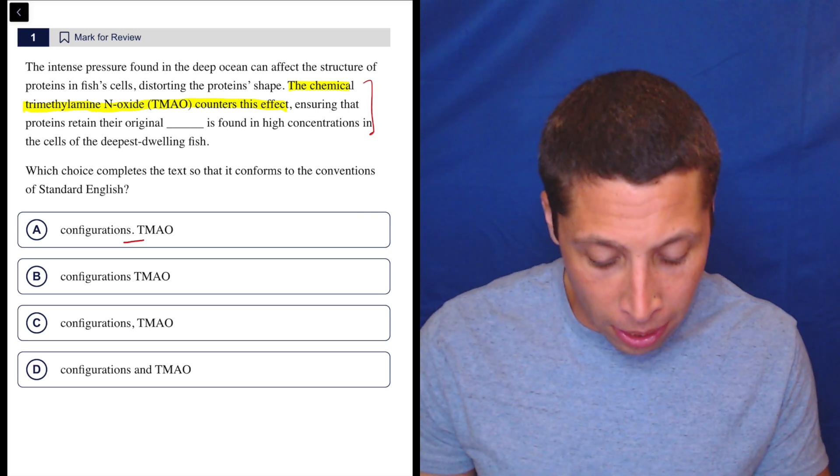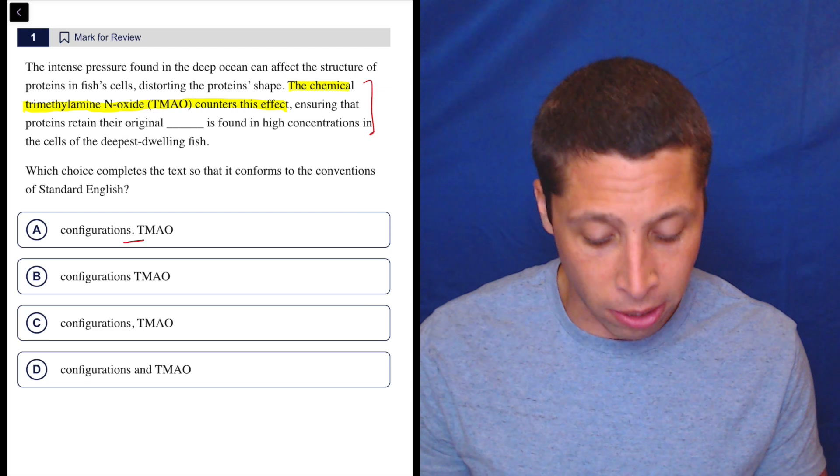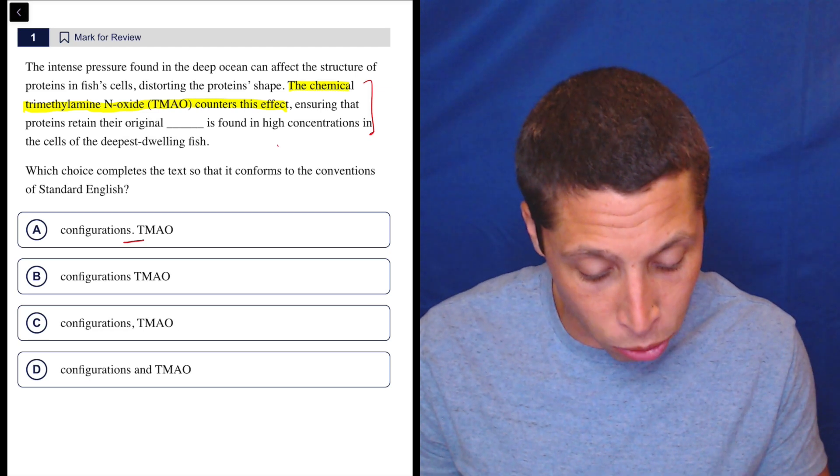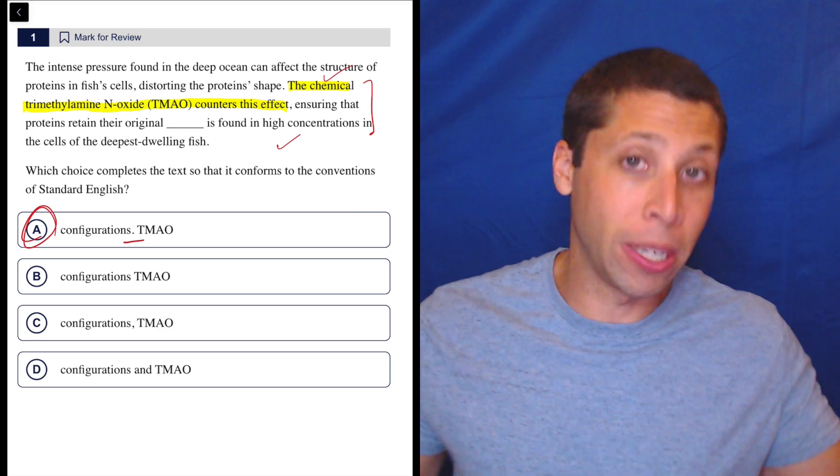Let's look for another. TMAO is found in high concentrations in the cells of the deepest dwelling fish. Yeah, that's also a sentence. That sounds good. So check, check, two sentences. No doubt. We need a period.